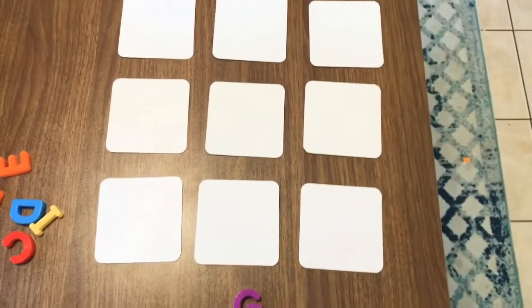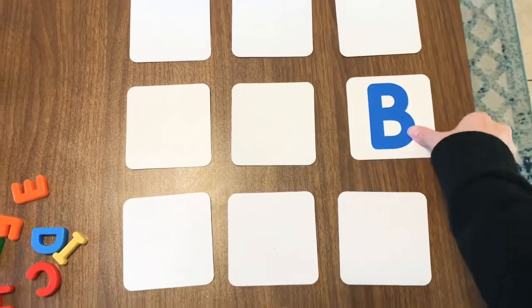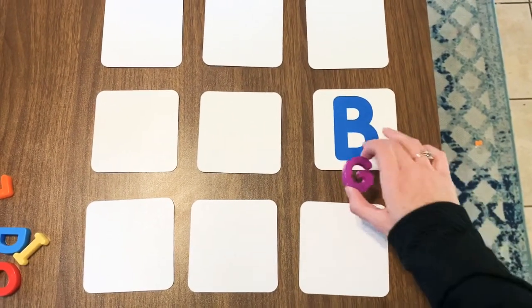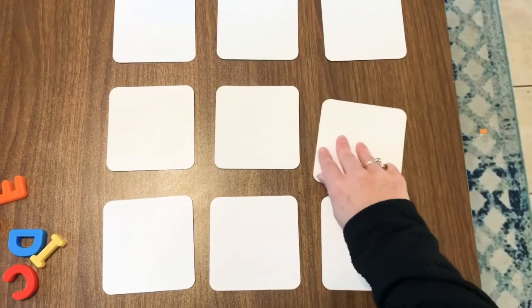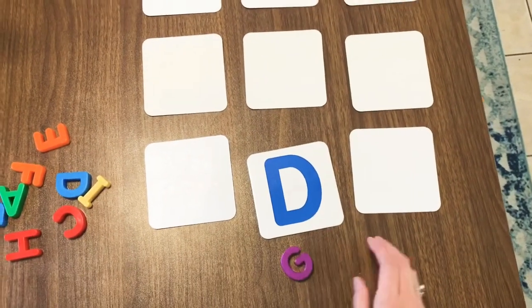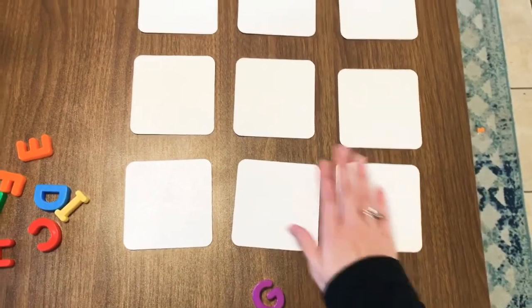So what I'm gonna do is pick up a magnetic letter and I have letter G. So I am going to overturn the letter and see if it's a match. Is that a match? No, that's B. So then I'm gonna flip it back over. No, that's D.